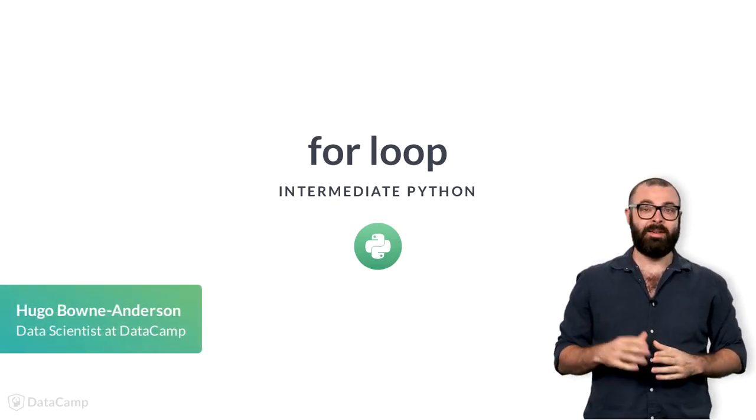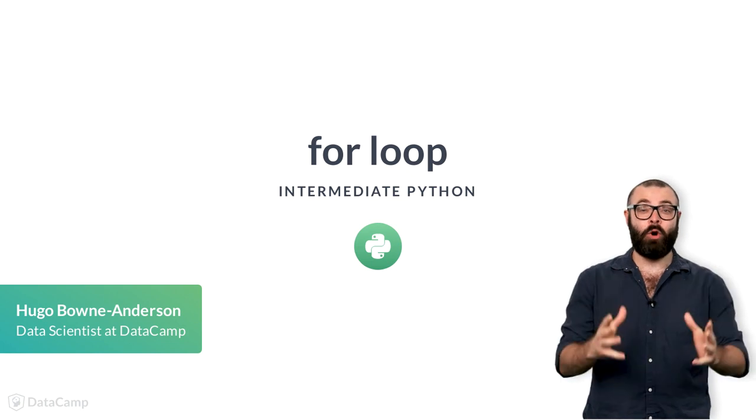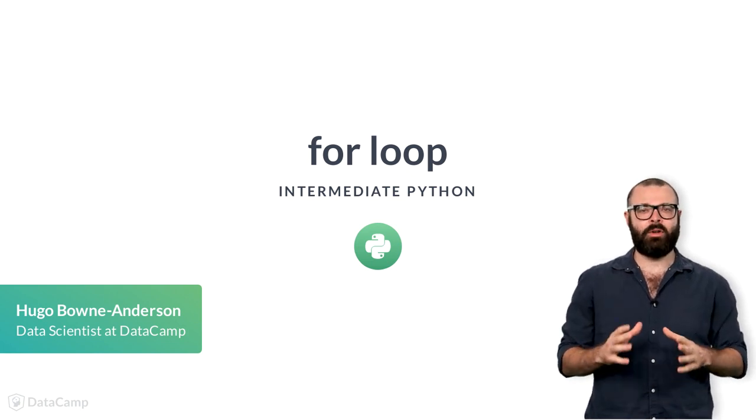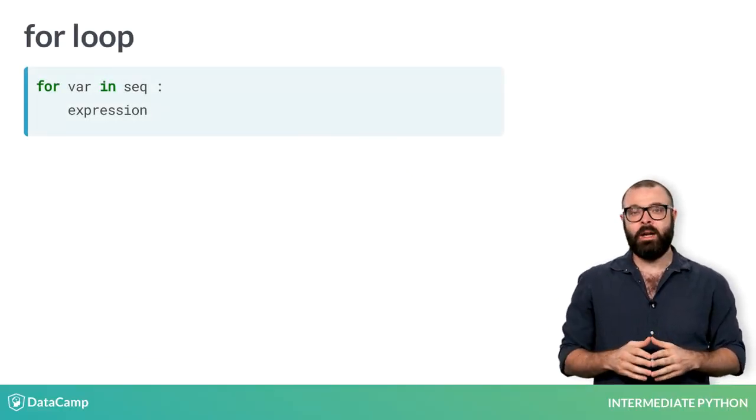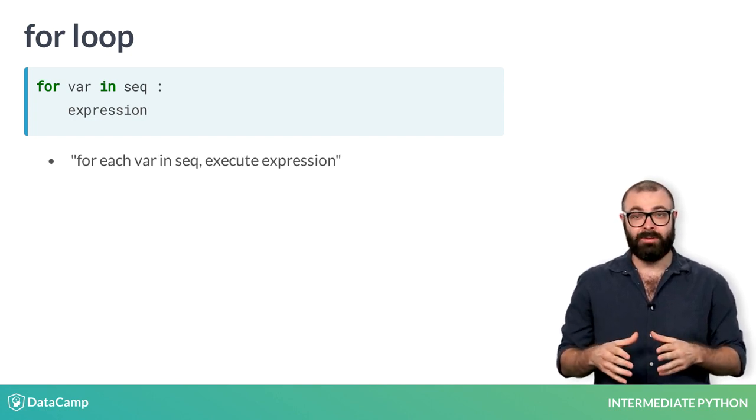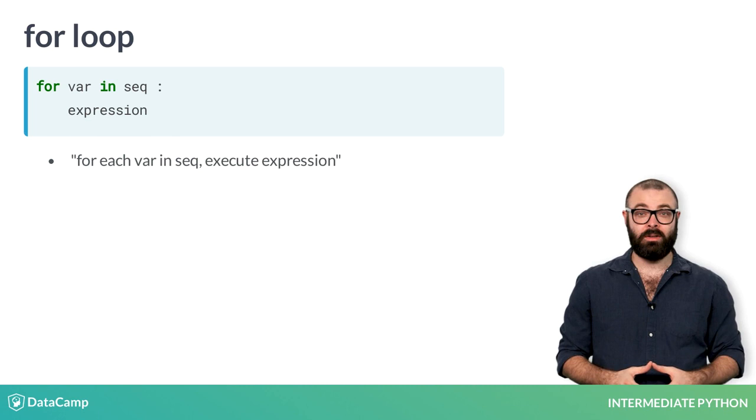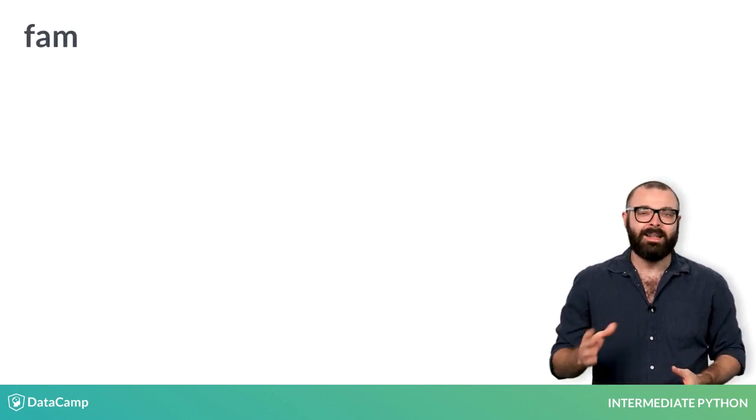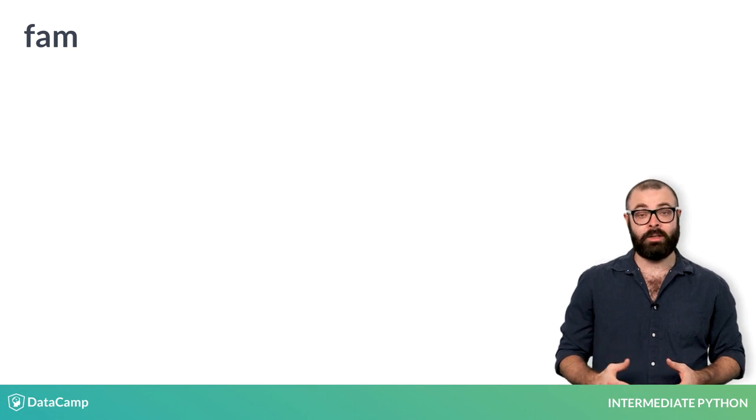You've seen the while loop, and now it's time for another loop, the for loop. Have a look at the for loop's recipe here. This can be read as: for each var, a variable, in seek, a sequence, execute the expression. Make sense? Let's see how this actually works with an example.